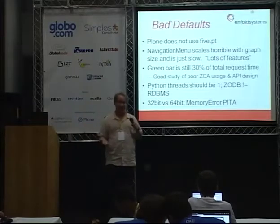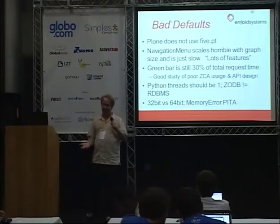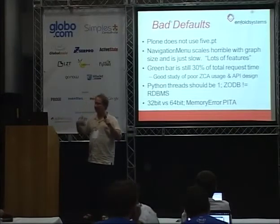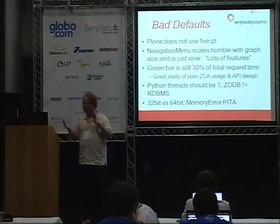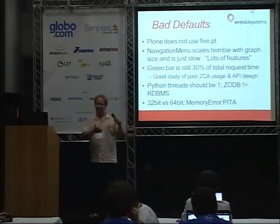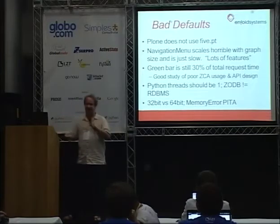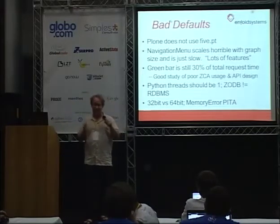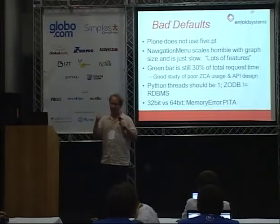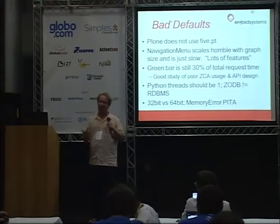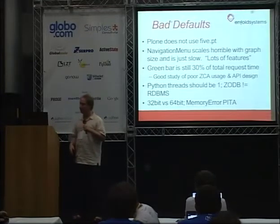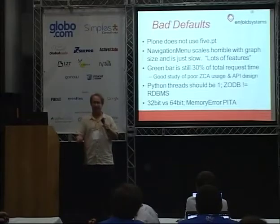Some of the bad defaults that will prevent scaling in Plone: not using 5.pt. The navigation menu scales horribly — it actually gets worse as your graph gets bigger, and it's just slow. There are several alternatives but they don't have the features, and the features are why it's slow. You don't get features and you don't get scale — you have to pick one. The green bar is ripe for optimization. If you want to look at how not to do things, the green bar in Plone is exactly how not to do anything — it represents poor usage of the component architecture and terrible API design, punting on the design and just letting the component architecture handle it. It's an absolutely terrible idea.